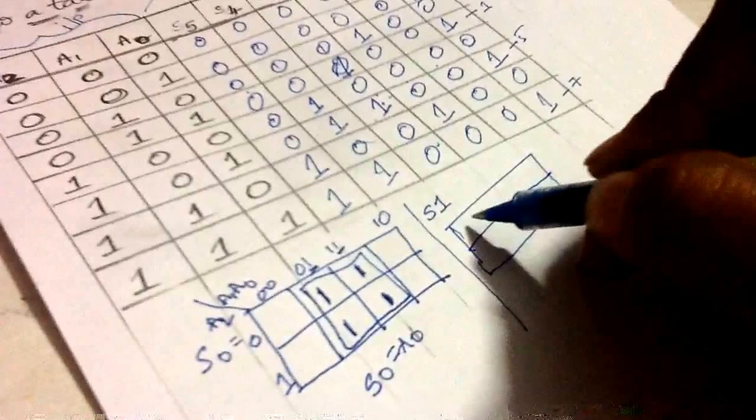A1 bar, sorry for that. A2 into A1 bar plus A0, and S5 is A2 A1. This is going to be S5. This is the overall diagram of the combinational circuit.